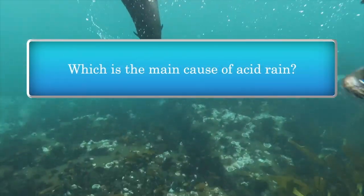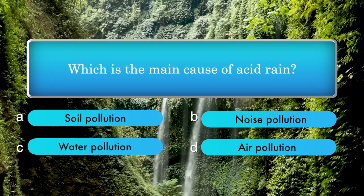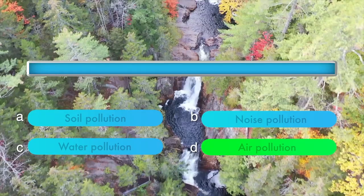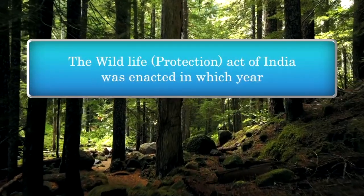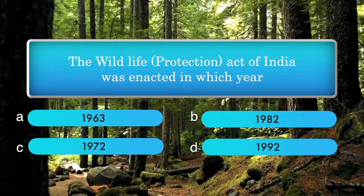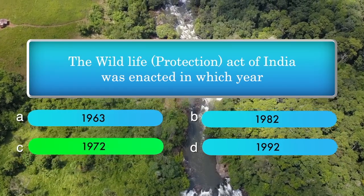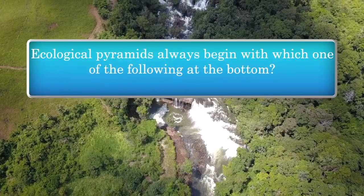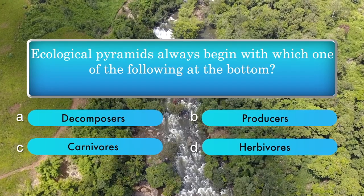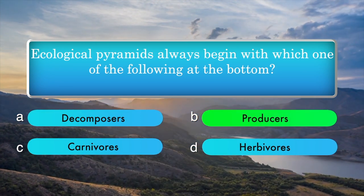Which is the main cause of acid rain? Options: soil pollution, noise pollution, water pollution, air pollution. Answer is air pollution. Ecological pyramids always begin with which one of the following at the bottom? Options: decomposers, producers, carnivores, herbivores. Answer is producers.